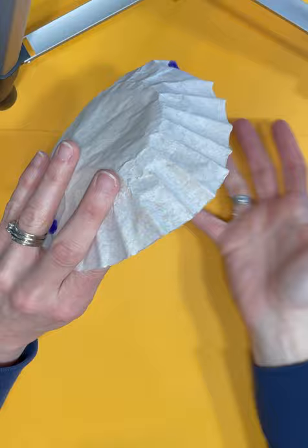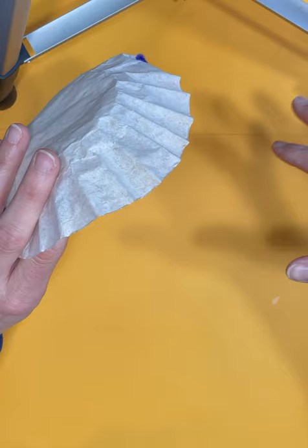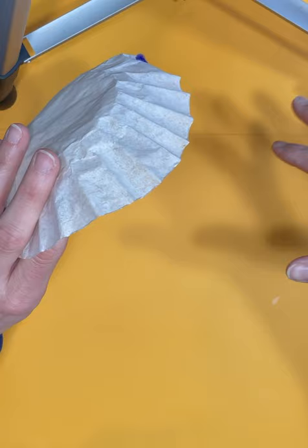So the bigger your parachute, the more air is going to push up against gravity. Gravity is working to pull us down and that air underneath is holding it up, so they're kind of working against each other. The more air resistance you have, that force is going to slow down gravity and allow it to fall a little bit slower.